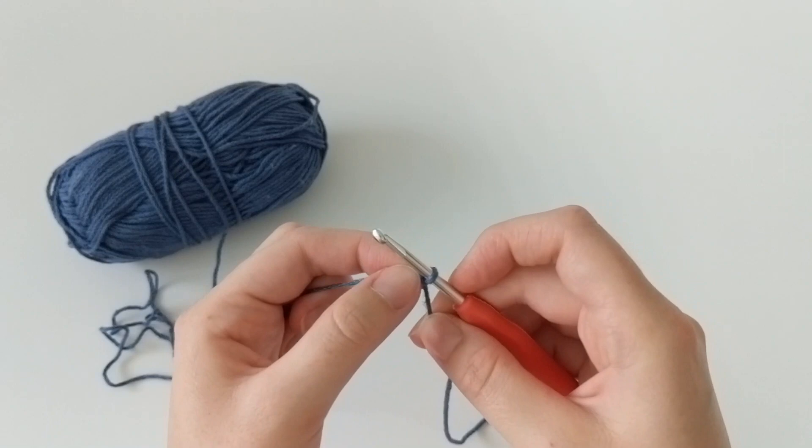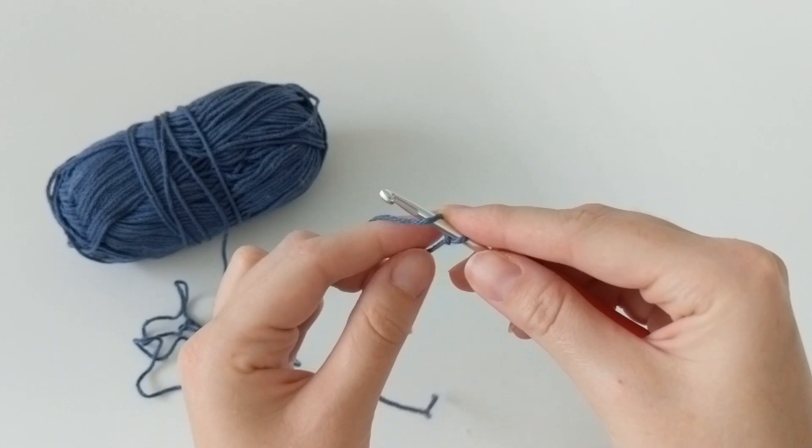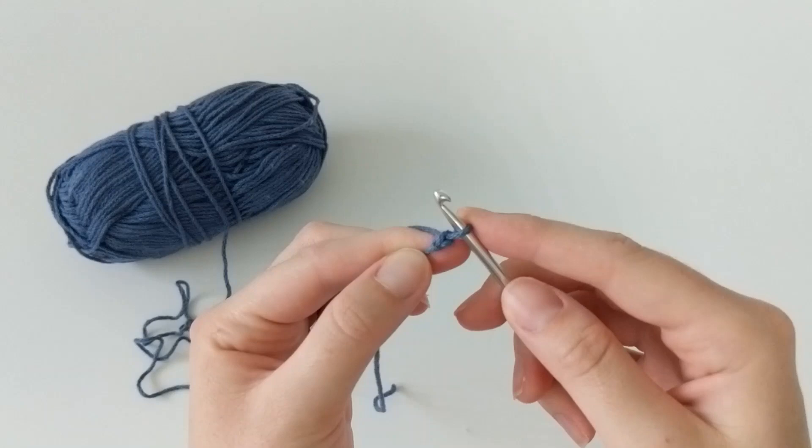So when making a chain, it's actually fairly easy. You just got to get the right technique. So you're going to wrap your yarn over the hook and pull through. That's your first chain.